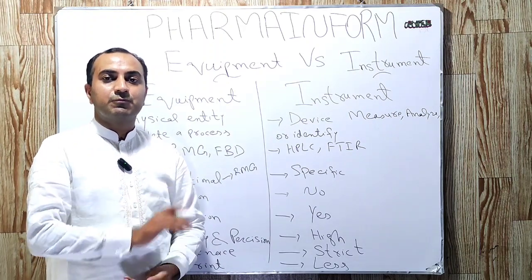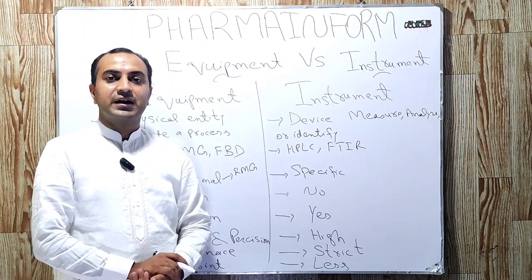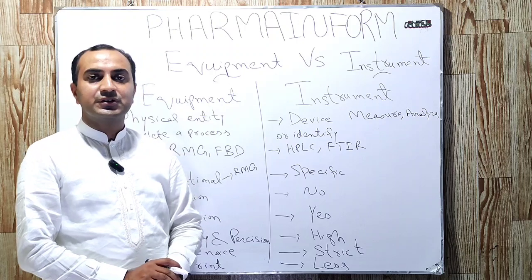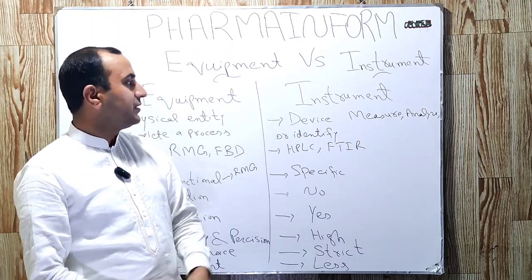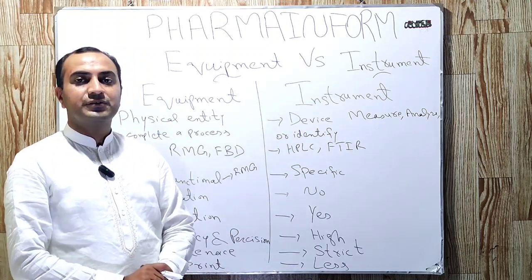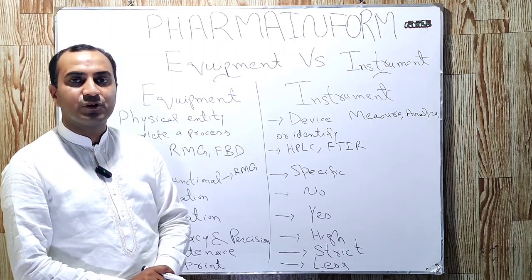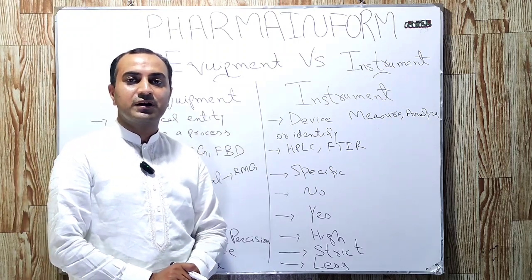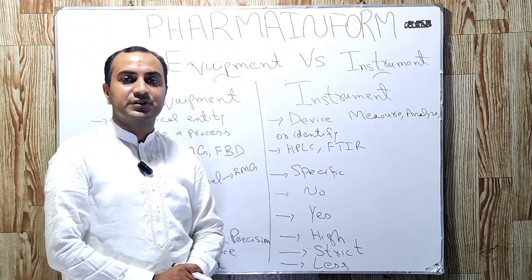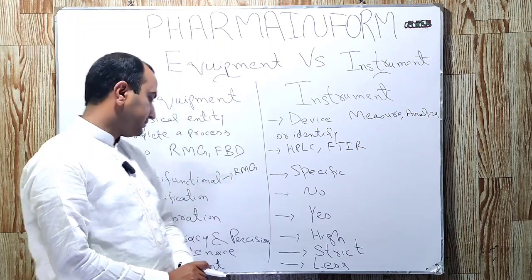The next difference is accuracy and precision. For equipment, accuracy and precision are not very strictly required, while for instruments, precision and accuracy are very important and are strictly monitored.